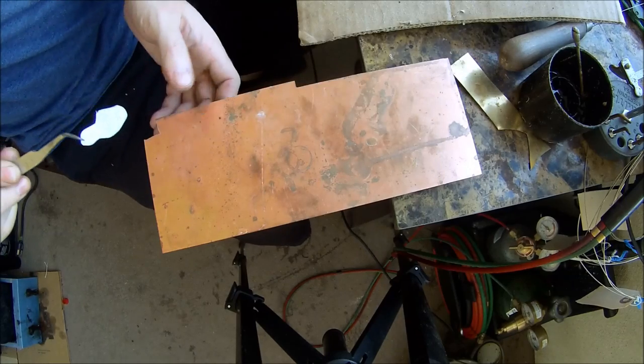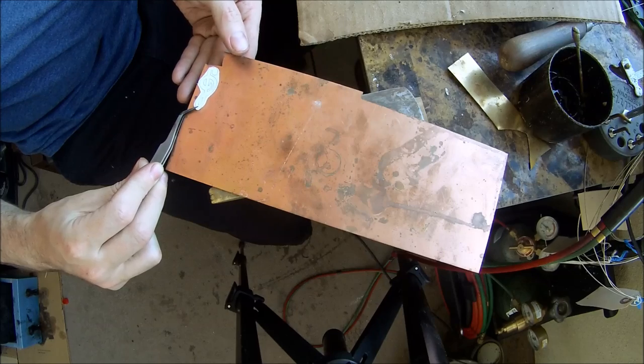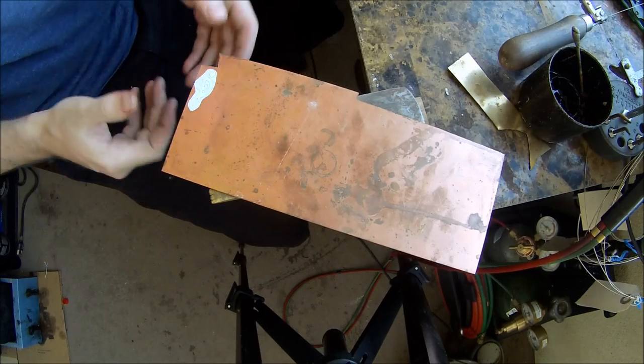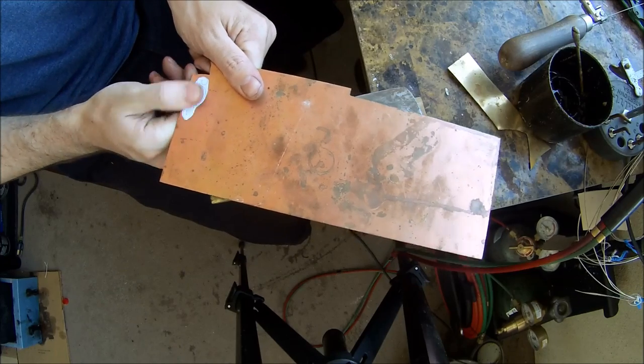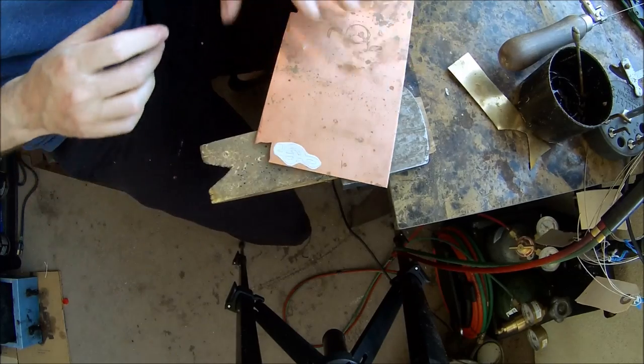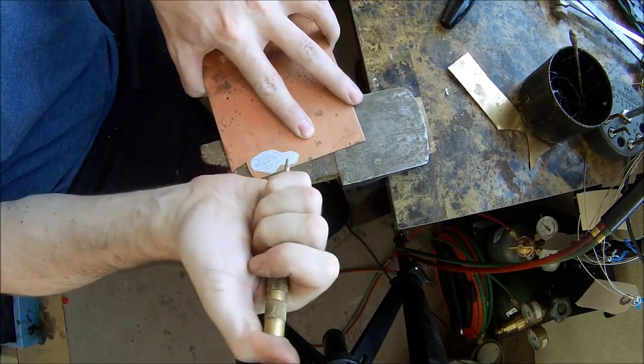So first, you're going to want to mark the piece. I use printer paper and print out the pattern I made in Illustrator and use an adhesive on the back to basically glue it to the piece of metal. Once that's done, I kind of let it dry a little bit and make sure it's stuck because it will slip off.